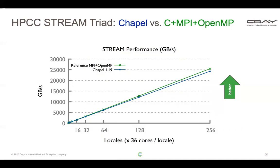There's a slight gap because Chapel typically runs with huge pages on, while MPI and OpenMP typically run with huge pages off, so we ran each in its preferred environment. If we change them so they're both running with huge pages on or off, these lines would be essentially identical to one another.